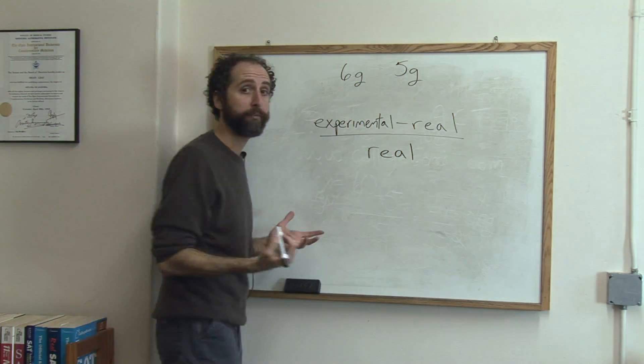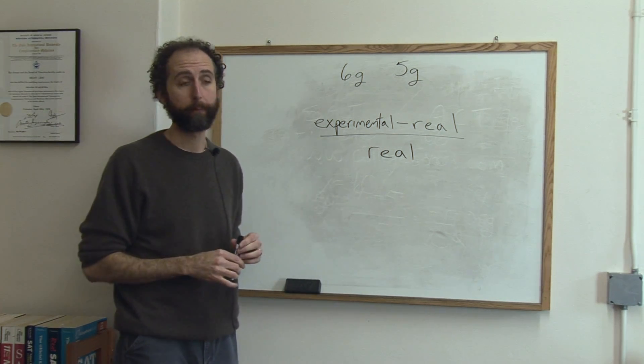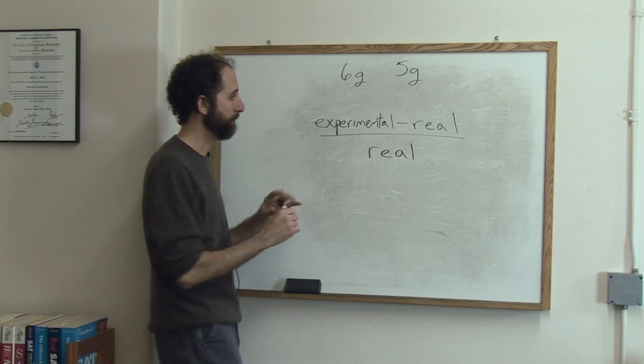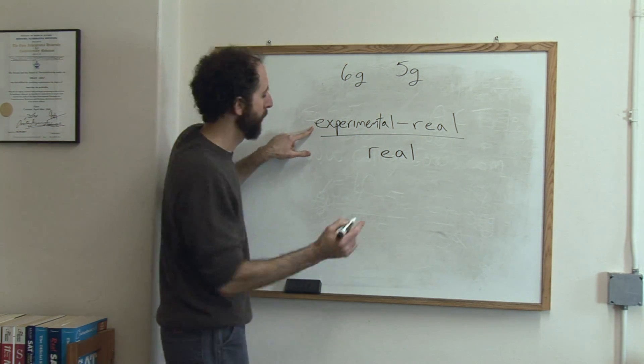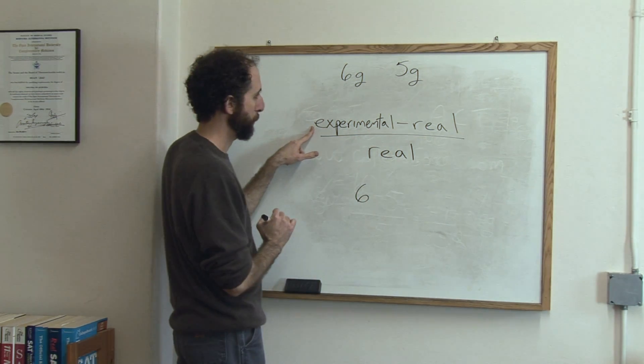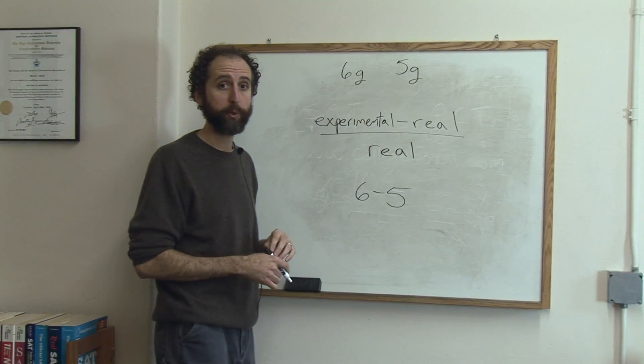In the lab, they'll very often ask you to calculate the relative error, or sometimes they call it experimental error. So here's the formula. Let's look at that first. Experimental means how much did you get in your experiment? That's all it means. So your experimental was six, and then minus the real. What was the real? The real was five. We know that's what it was supposed to be.